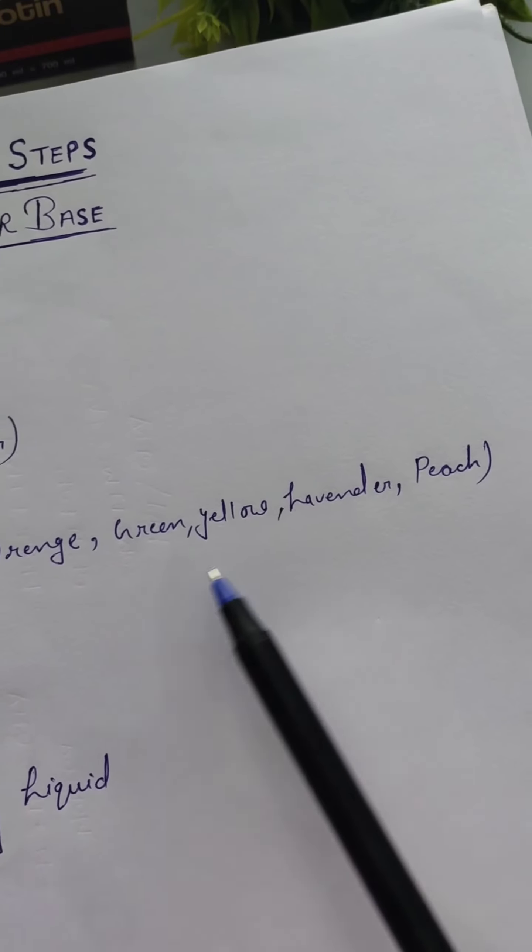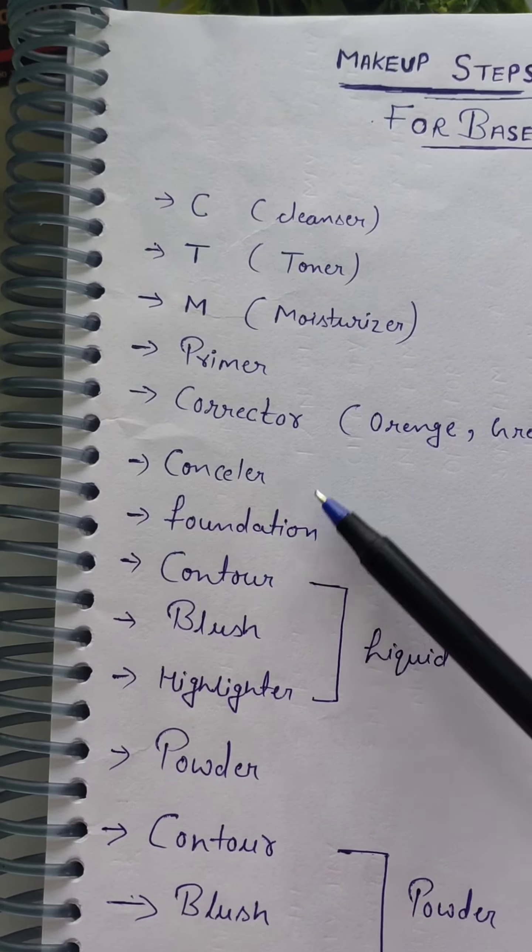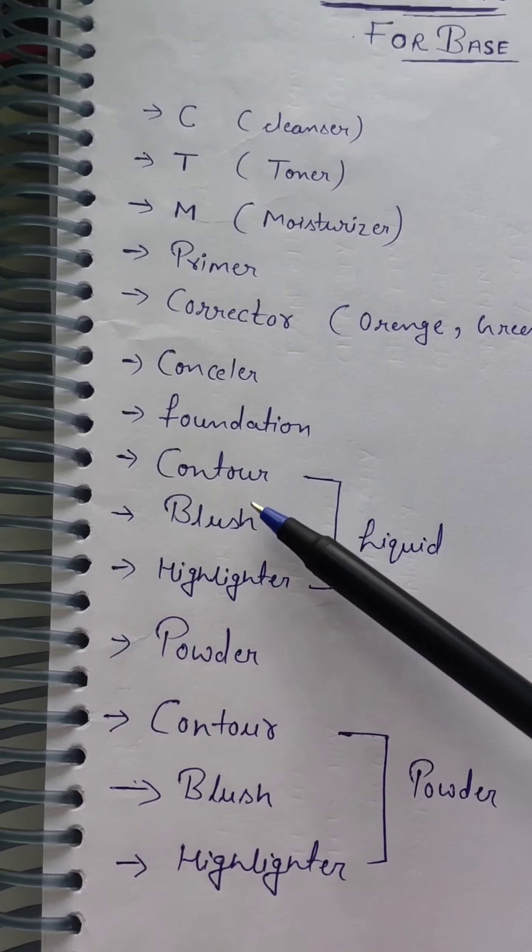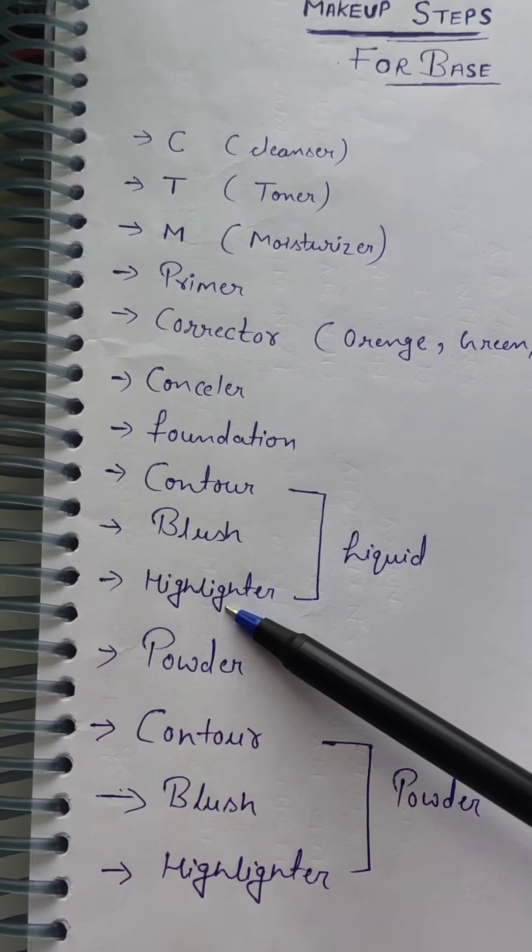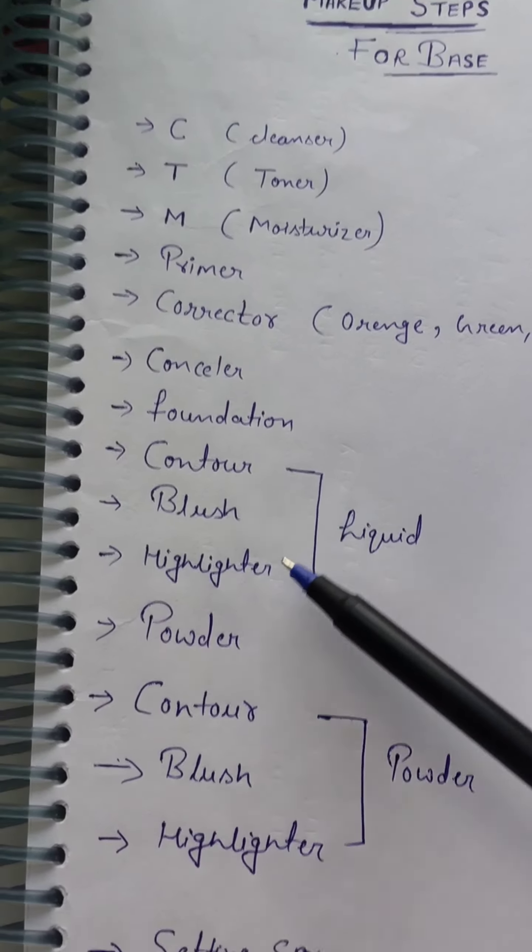You have to select based on your need and apply it. Then you have to use concealer and foundation. After that, you use contour, blusher, and highlighter. You have to use liquid, which means liquid contour, blusher, and highlighter.